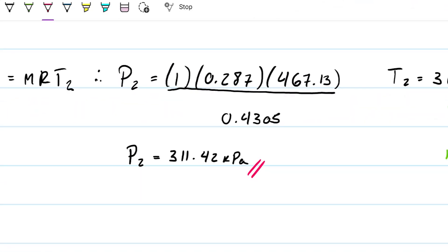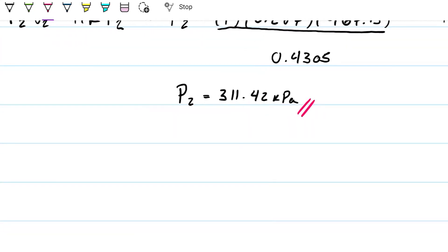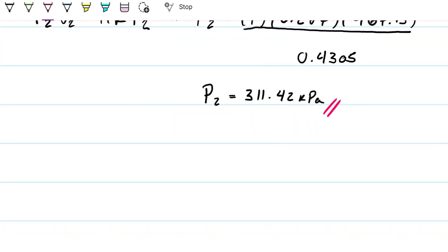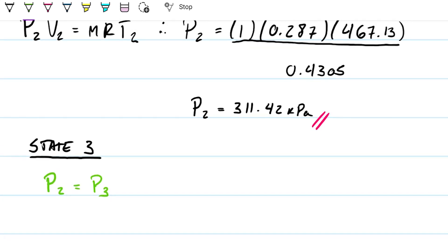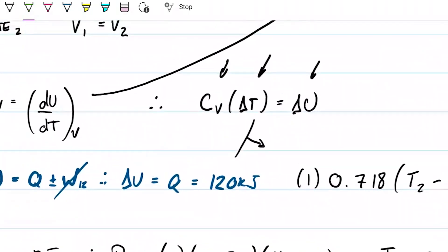You're free to check this unit-wise, and you actually should check this unit-wise. In case I made any mistakes, you can correct me. For state 3, we know that pressure 2 equals pressure 3 — it's a constant pressure process — so therefore pressure 3 is also 311.